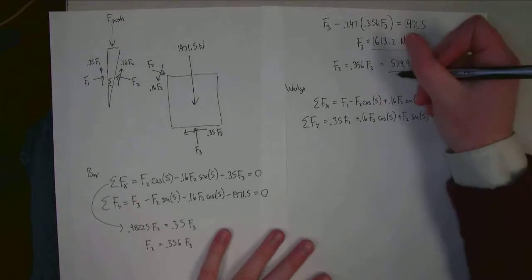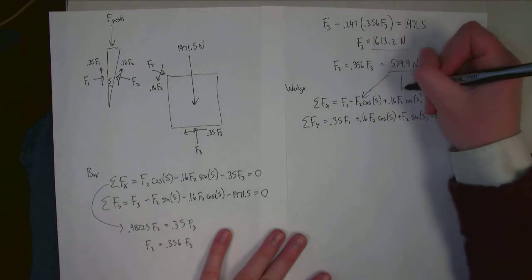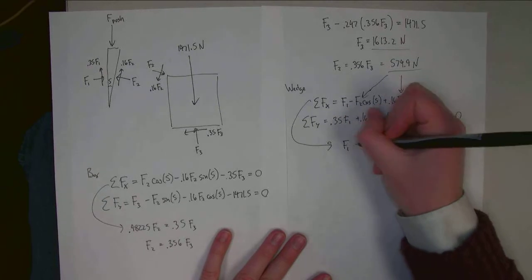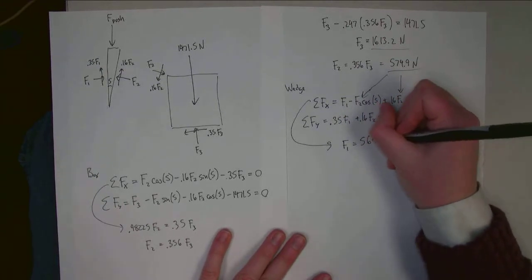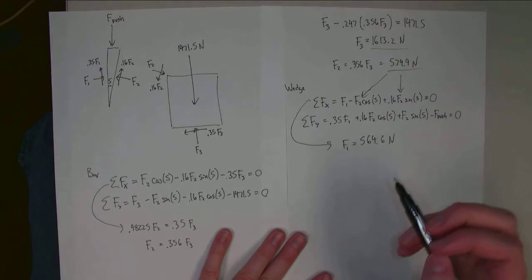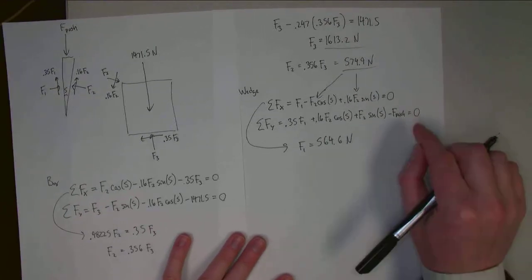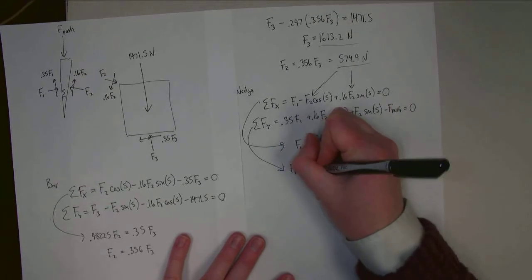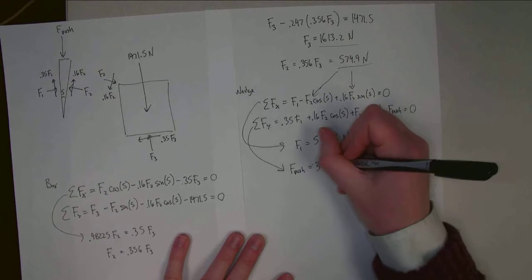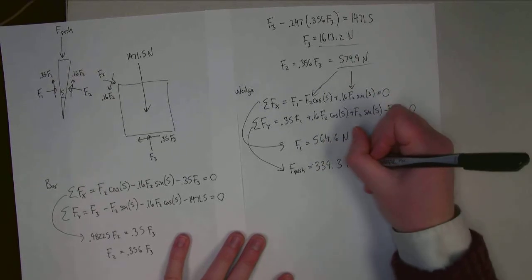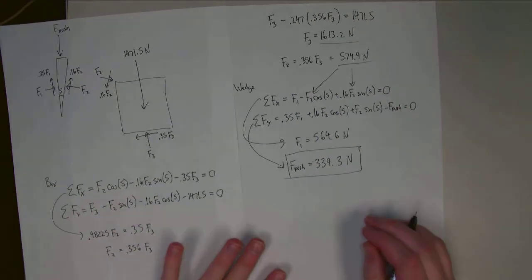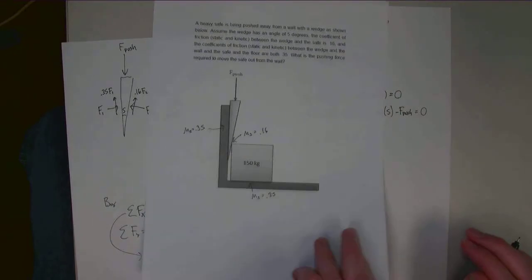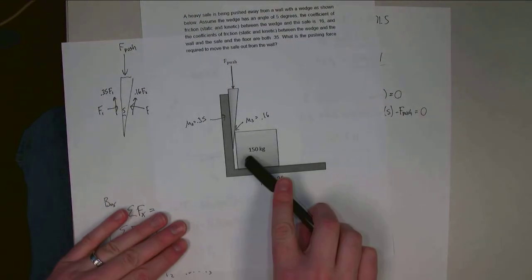Plugging in F2 = 574.9 newtons, using the X equation I find F1 = 564.6 newtons. Then using the Y equation, F push = 339.3 newtons. That is the pushing force applied downward on the wedge, which — as shown in the original diagram — pushes the wedge in and moves the entire safe to the right.